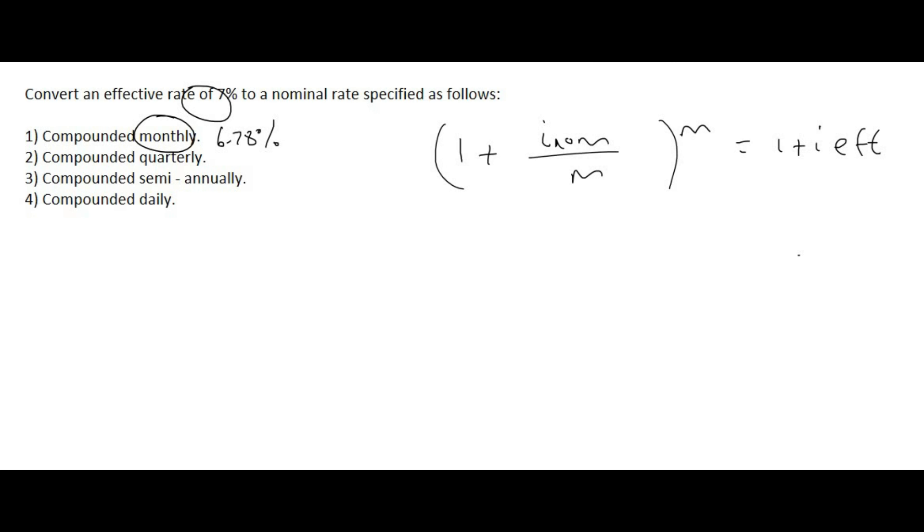And so by the same way, we can go to number 2, where we don't know the nominal, but we know that it's compounded quarterly. So that's a 4 and a 4. And then the effective is 0.07. And then by the same way, you would go and calculate everything. And at the end, you would get an answer of 6.82%. So a little trick or tip I would give you guys is that effective should always be slightly more than nominal.